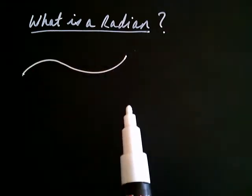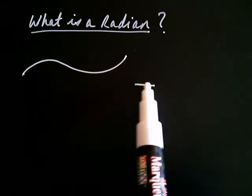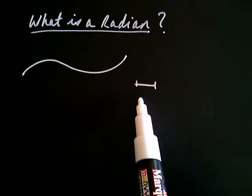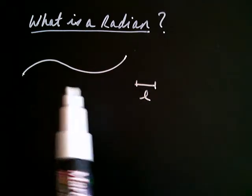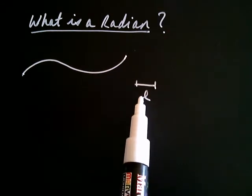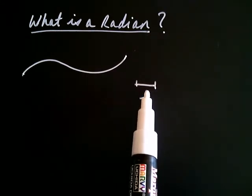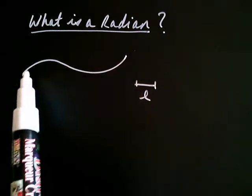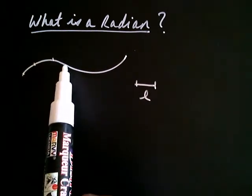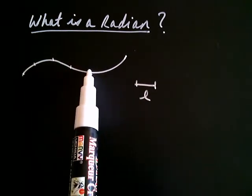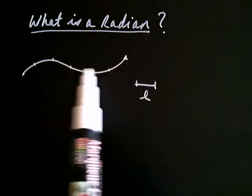We're going to measure this curve using little line segments. The line segment that we're interested in using we'll label L. Using this little measuring stick, how many L's do I have in this curve? Just like you'd measure a curve on a map — maybe one, two, three, four, maybe five, and pretty close to six L's.